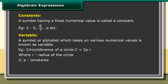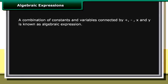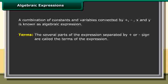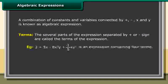2π are constants. Algebraic expression: A combination of constants and variables connected by plus, minus, multiplication, and division is known as an algebraic expression. Terms: The several parts of an expression separated by a plus or minus sign are called the terms of the expression.